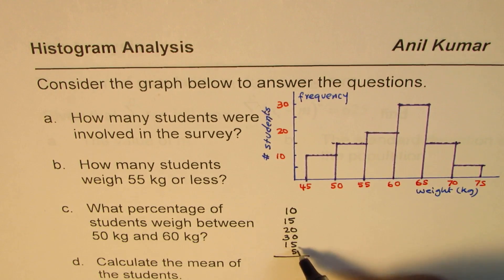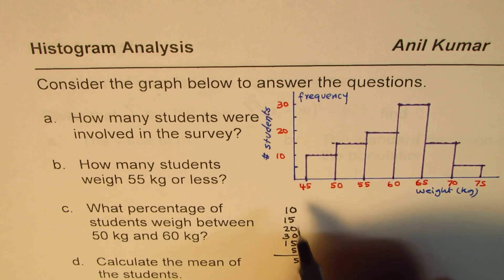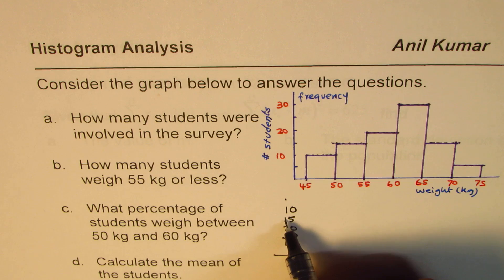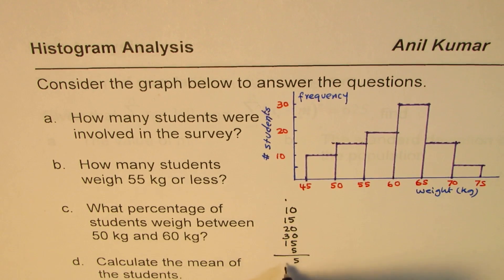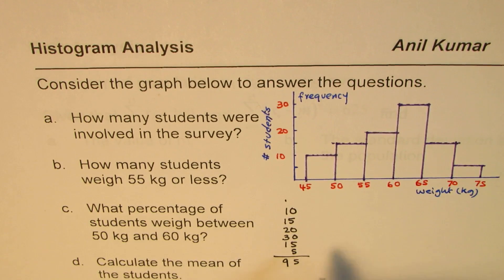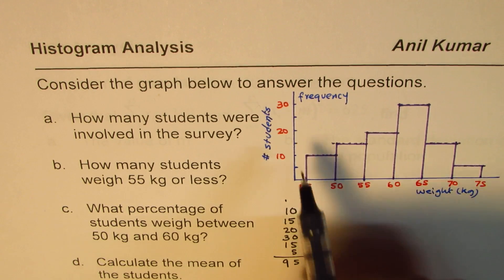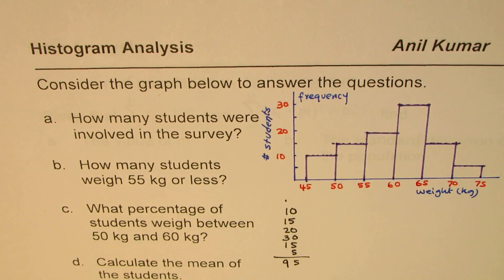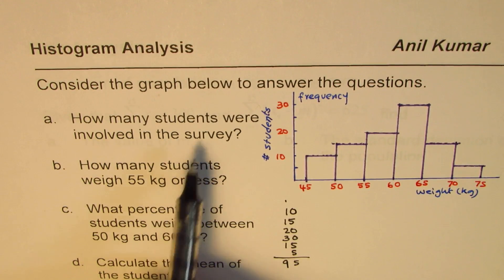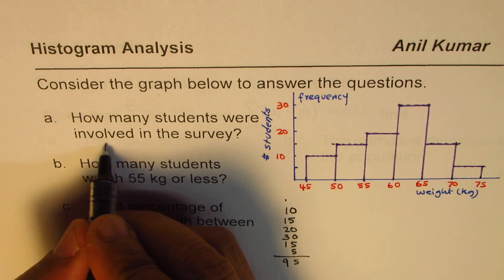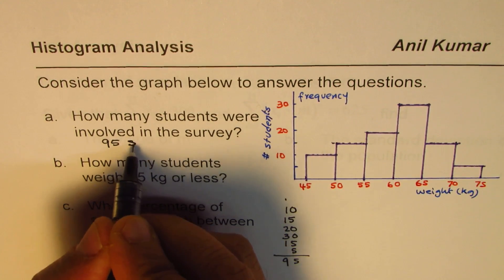Let's add them up: 10 + 15 + 20 + 30 + 15 + 5 = 95. So 95 is the total number of students. How many students were involved in the survey? There were 95 students.